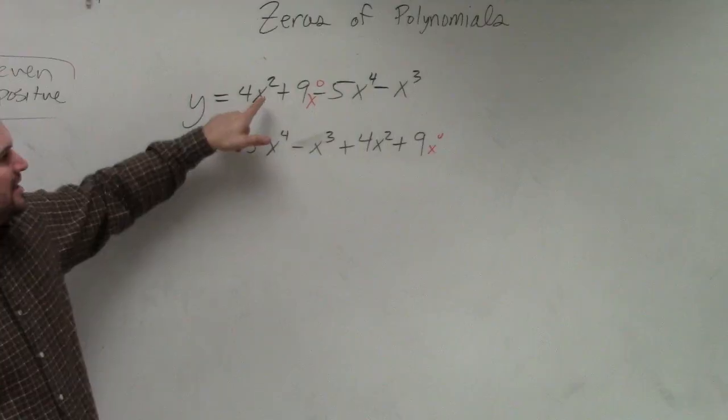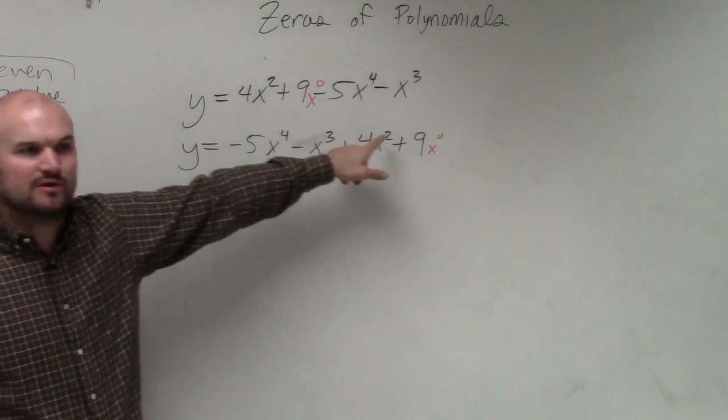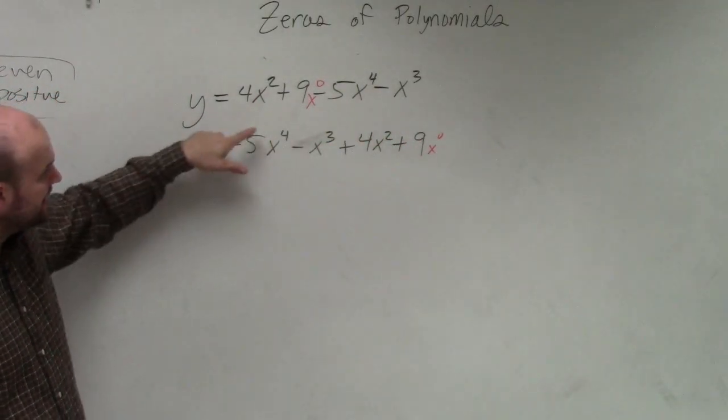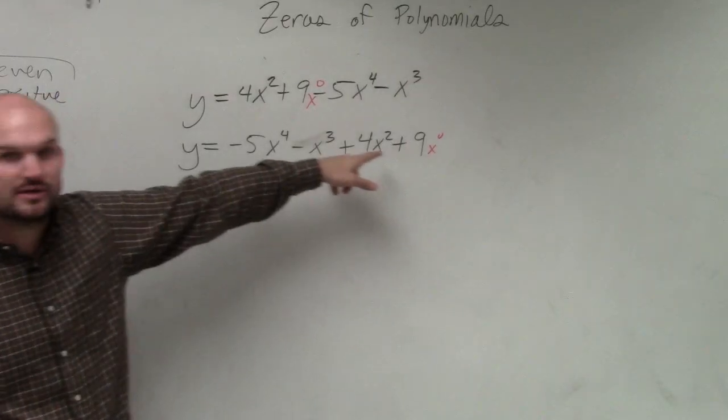And then you probably would have kept it the way it was because you would have thought that leading coefficients were what determines it. But that's not the case. It's how the powers are in descending order. Does that make sense?